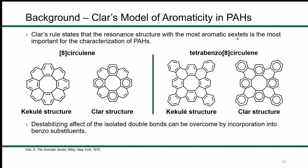Clar's rule basically states that the resonance structure with the most aromatic sextets is the most important for characterizing PAHs. In the general 8-circulene structure, you can incorporate four rings into aromatic sextets, but that leaves four isolated double bonds. These isolated double bonds are the source of the instability. Our group decided the easiest way to solve this problem is to incorporate them into their own aromatic sextets by adding benzo substituents on the periphery of the molecule.